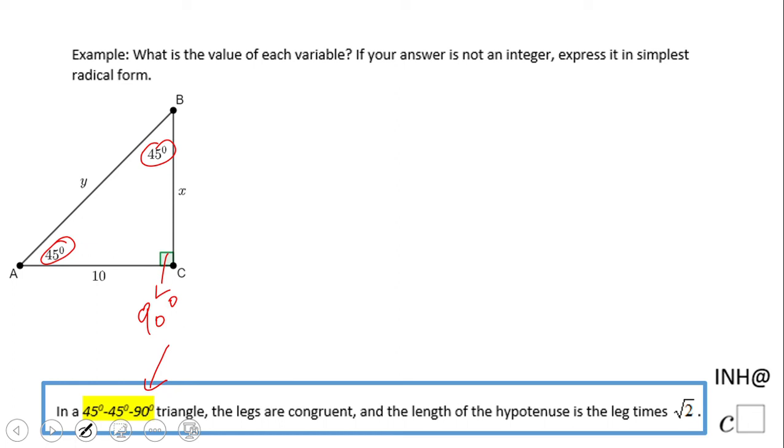The legs are congruent, right, because this is an isosceles triangle. 45 and 45, two congruent angles, so that is an isosceles. And the length of the hypotenuse is the measure of the leg times square root of 2.